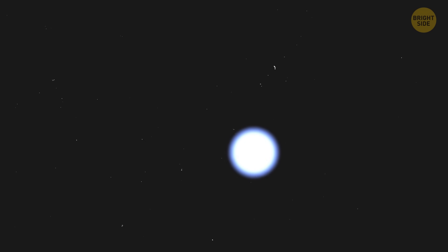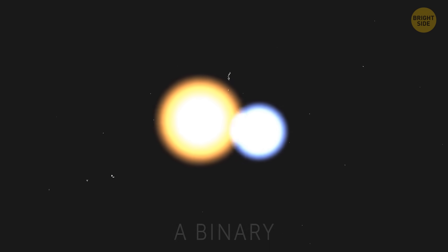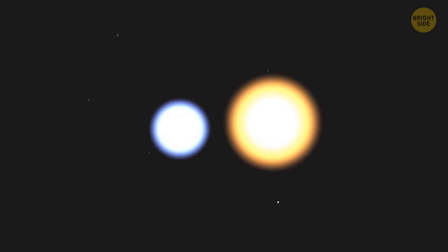T Corona Borealis is not your regular star. It's actually a binary, two stars orbiting each other. This pair, though, is incredibly special.